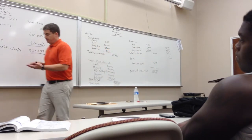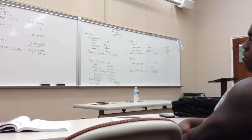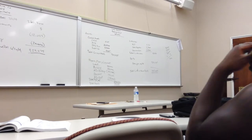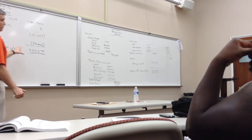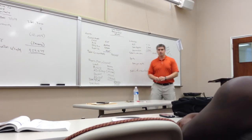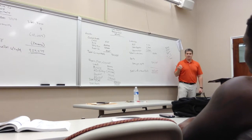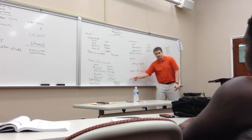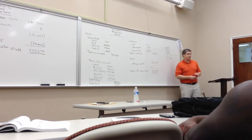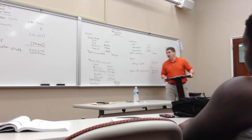If it still doesn't balance after those two checks, go back through the income statement, statement of owner's equity, and balance sheet numbers. If you run out of time and you're still not balanced, write what you have — it's not a zero on the test. You'll get some credit, just not full credit.